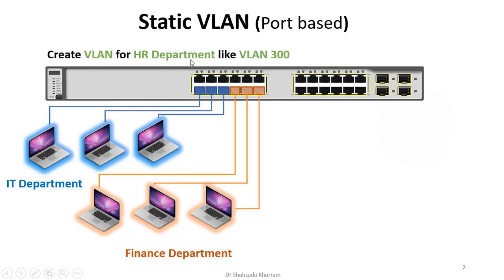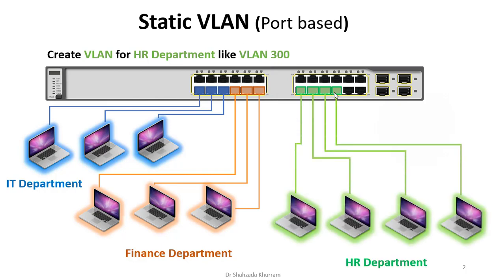Similar way, ek aur VLAN create kar lete hain jo HR department ki hai, usko hum kehte hain VLAN 300. VLAN numbering aap 2 se lekar 4094 tak koi bhi assign kar sakte hain. Phir is VLAN ko ports assign kar lete hain switch ke andar aur un ports ko HR department ke PC ke saath connect kar dete hain. Is tarah hum static VLANs create karte hain — manually har switch ke andar jaake.